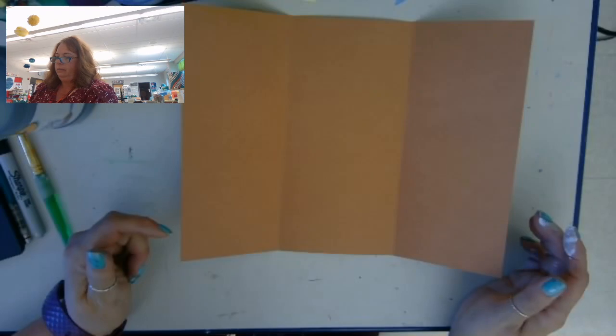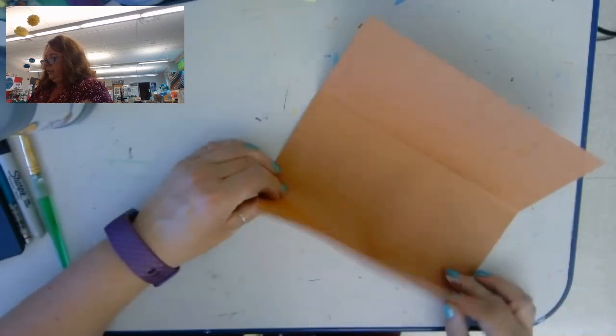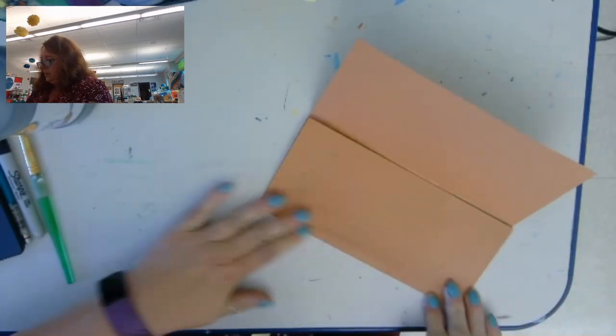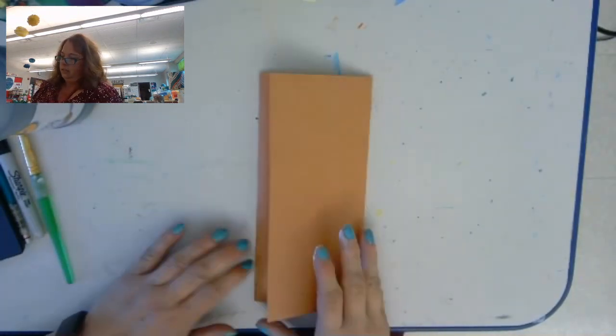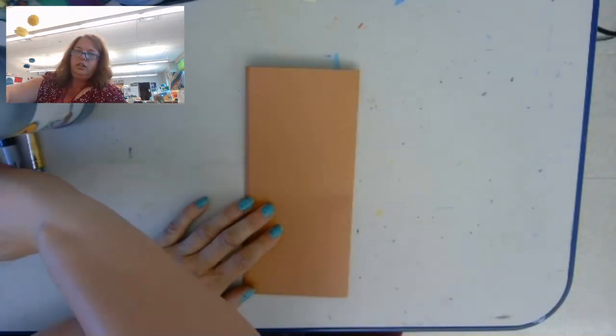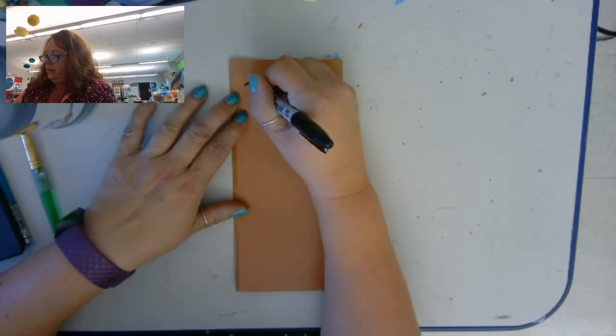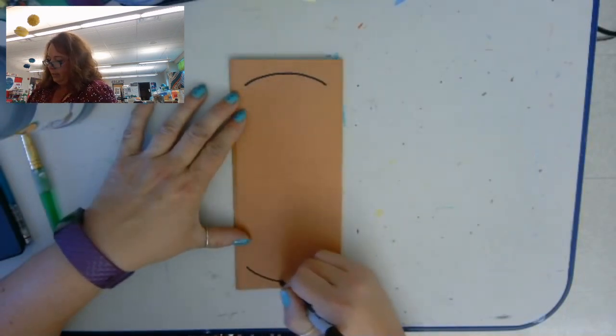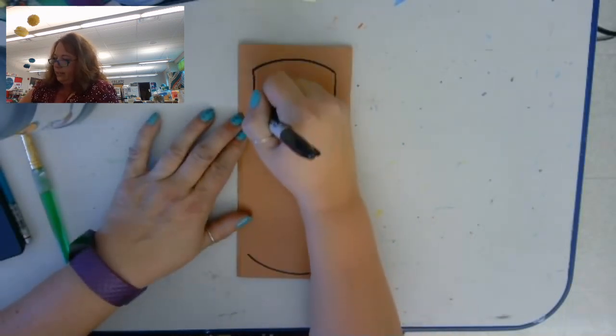The next thing I want to do is make the logs for the fire. I have a normal piece of brown paper, and I've folded it into three. Now, if you can't do this by yourself, you'll have to ask a grown-up to help you fold your paper into three parts. Now I'm going to draw a log shape, and I want to use a lot of the paper, so I'm going to make it round on both ends, and then I'm just going to draw straight lines to connect it.